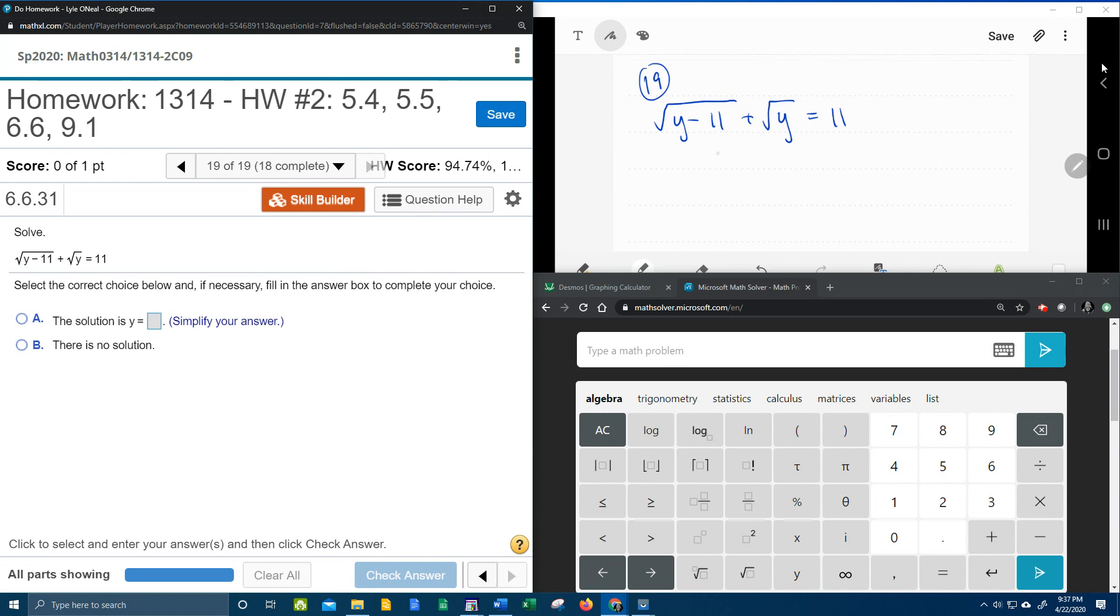I would like you to notice in this problem that we do have two radical terms with square roots, we've got two radical symbols, but we also have this 11 that's another term, and so this problem is going to be a little complicated, to say the least.